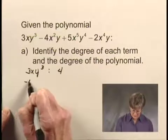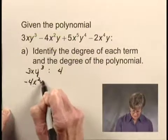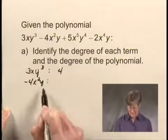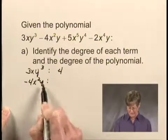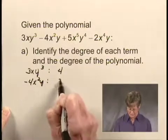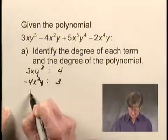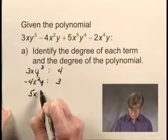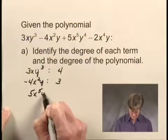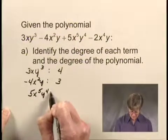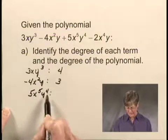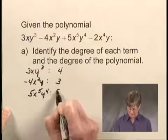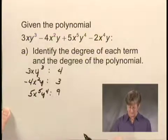The next term is negative 4x squared y. Again, we'll add the exponents: 2 plus 1 is 3, so that's the degree of the second term. The third term is 5x to the fifth y to the fourth, and again, adding the exponents, we get 5 plus 4, or 9 for the degree of that term.